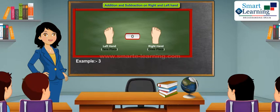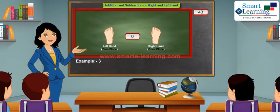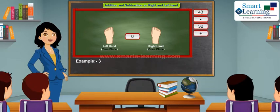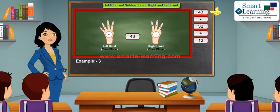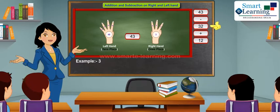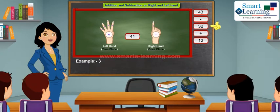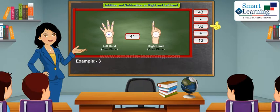Let's solve 43 minus 32 plus 12. Take 43 on your left and right hand respectively. In order to subtract 32, put down 2 fingers on your right hand and 3 fingers on your left hand.